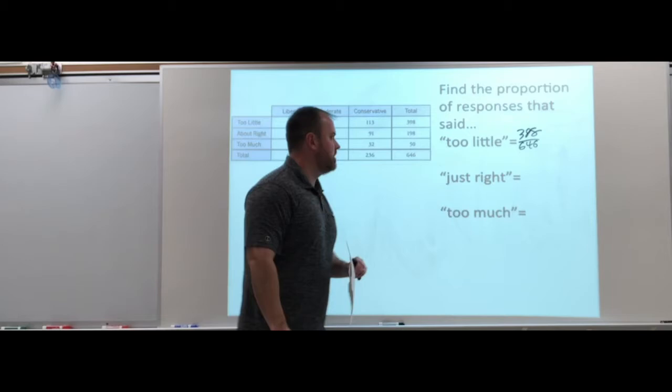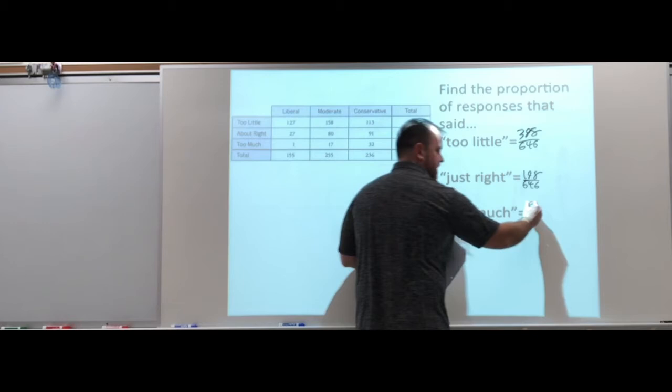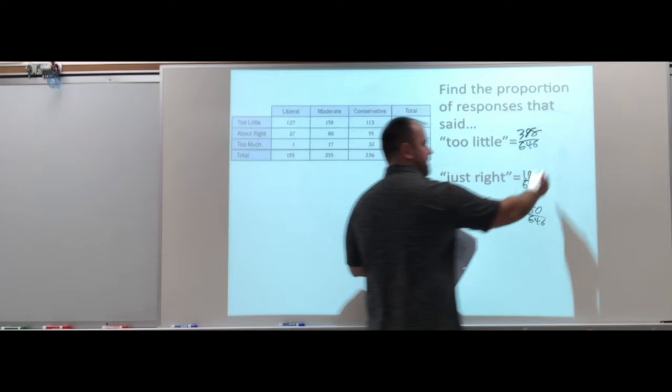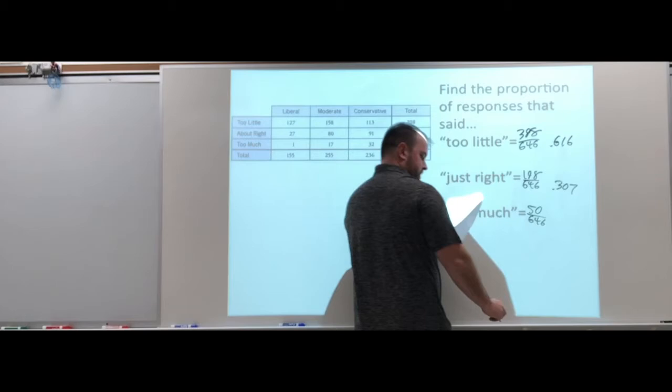398 divided by 646, 198 divided by 646, and 50 divided by 646. If I look at those proportions, I have 0.616, 0.307, and 0.077.